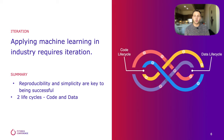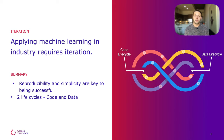To iterate quickly on machine learning models, we need to be able to track changes, prioritize stability and reproducibility, and support collaboration all at the same time. Furthermore, we have a new lifecycle that we need to consider: the data lifecycle.